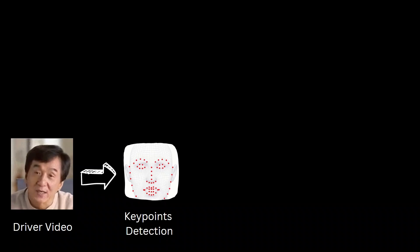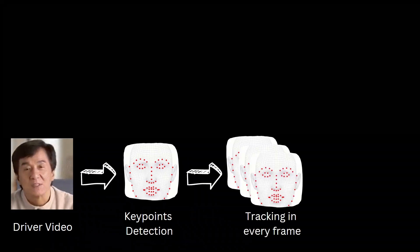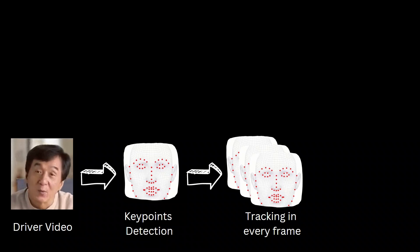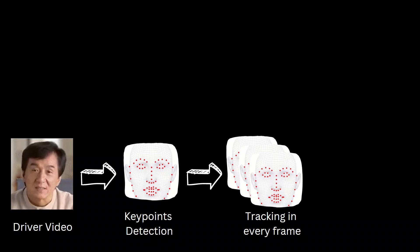Before showing you the demos, let me walk you through the process. You have a driver video and you want to animate your picture based on the content of this video. In the first step, we simply detect key points on the subject. For example, in this case there are some key points detected on the face. Then for each consecutive frame, those key points are tracked, and that will give you the movement of the face.